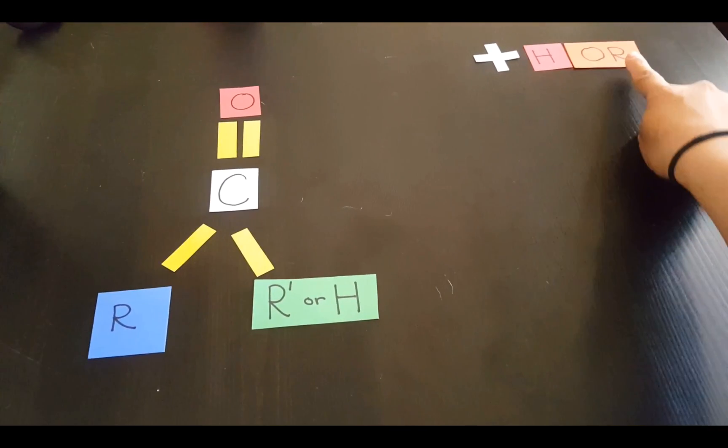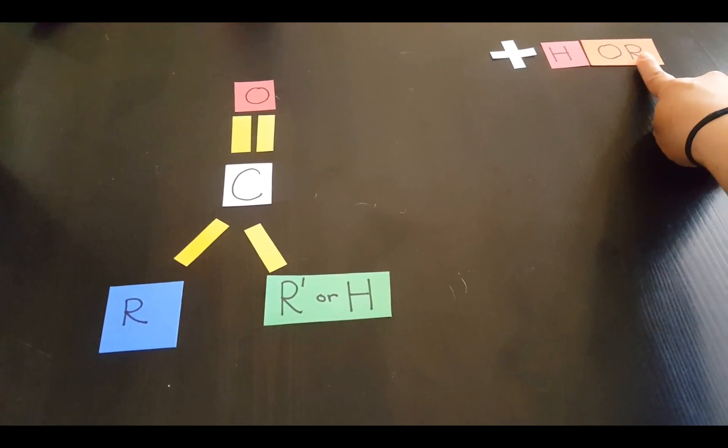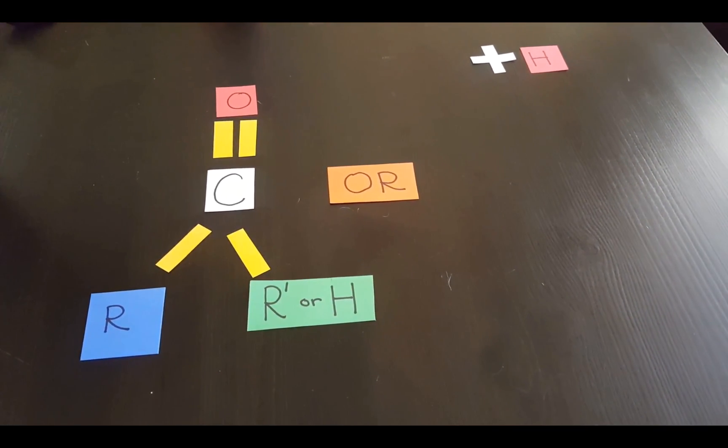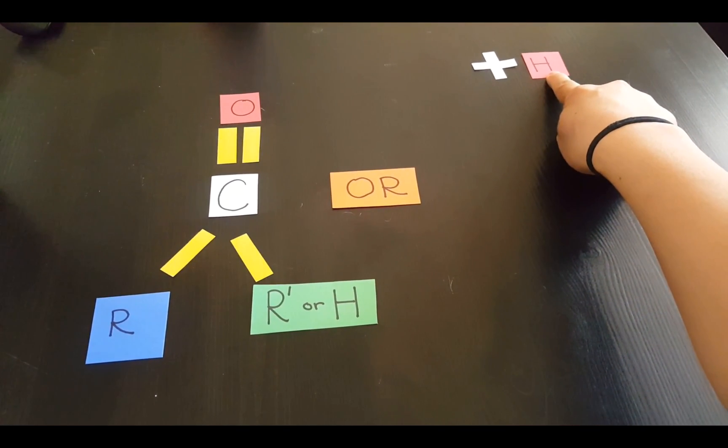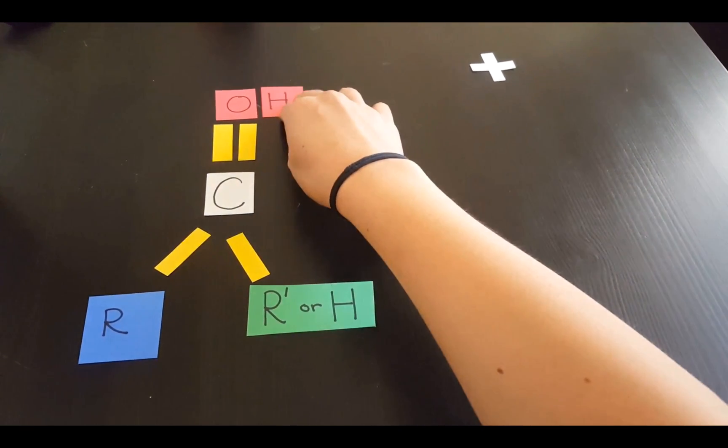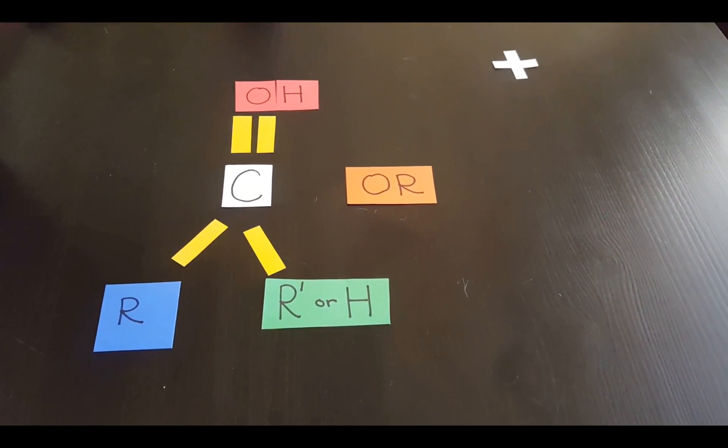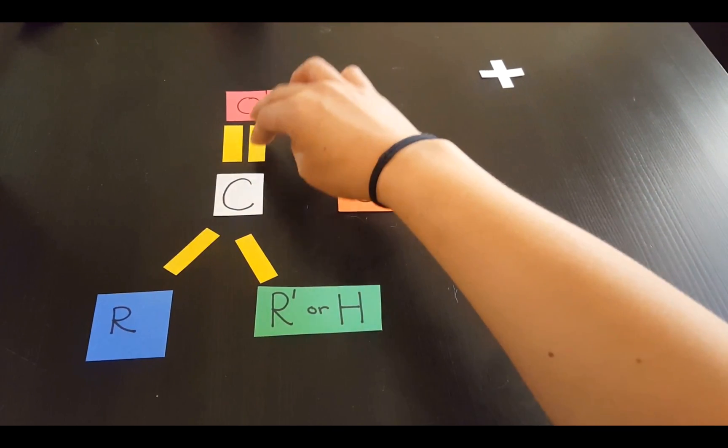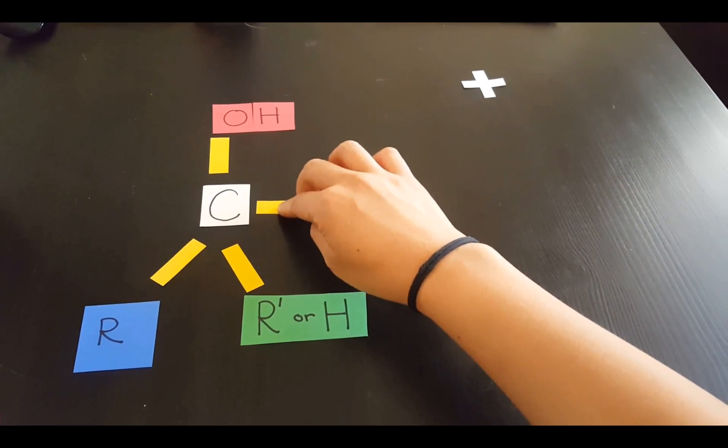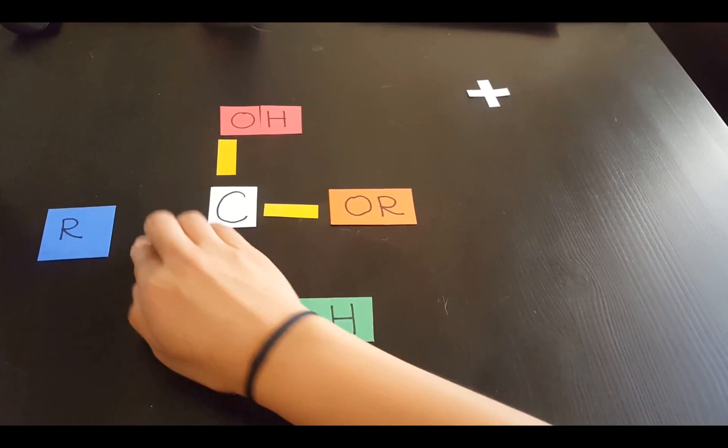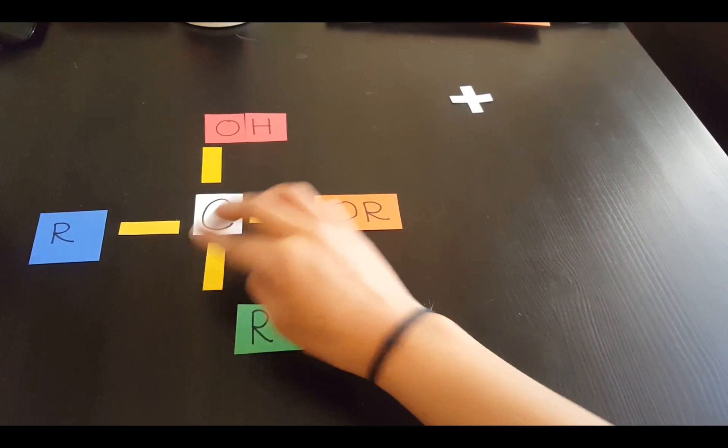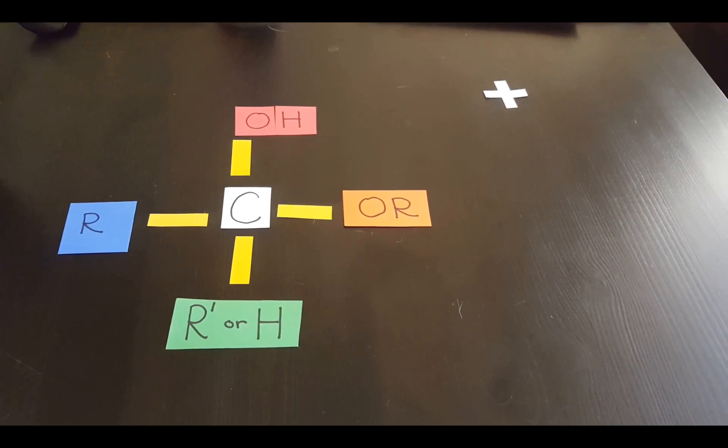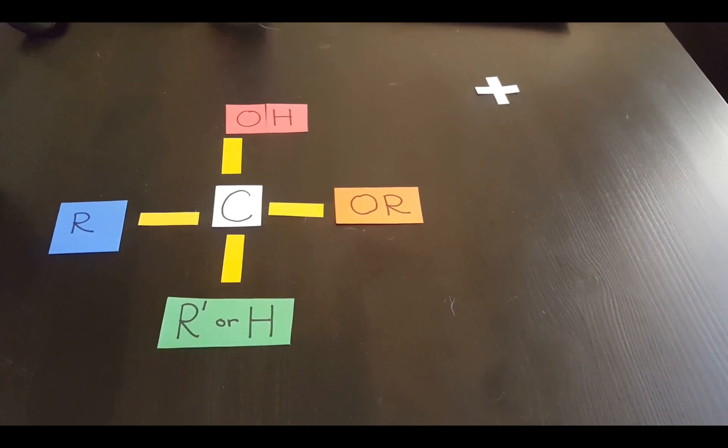The OR group from the alcohol forms a bond with a carbonyl carbon. The H from the alcohol bonds to the carbonyl oxygen. The carbonyl group's double bond is changed to a single bond. And that is how you get a hemiacetal when an aldehyde or ketone reacts with an alcohol.